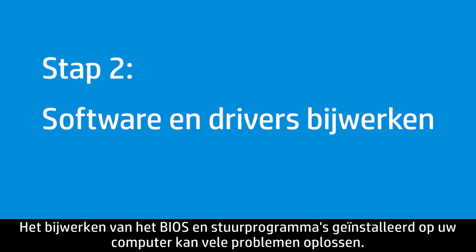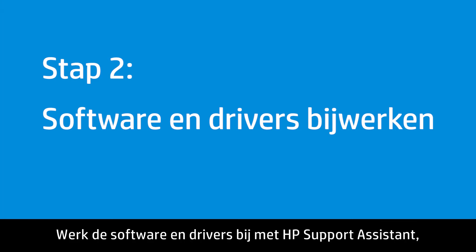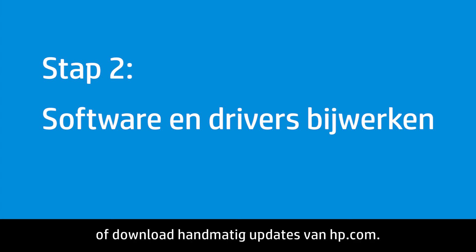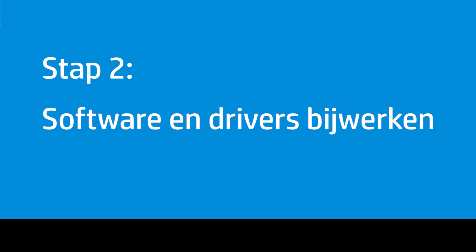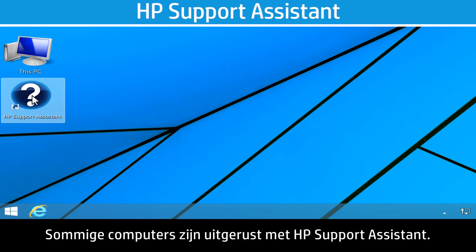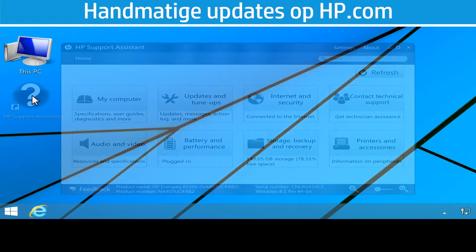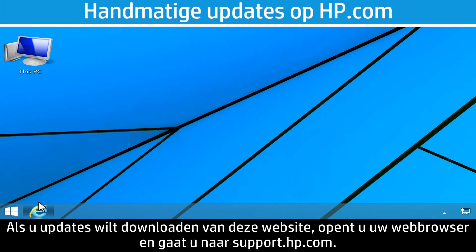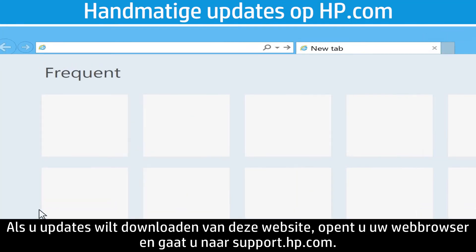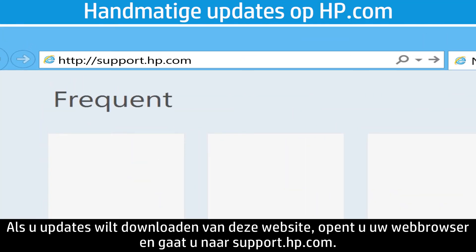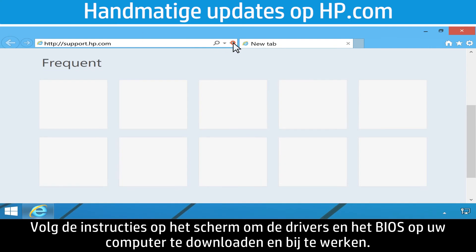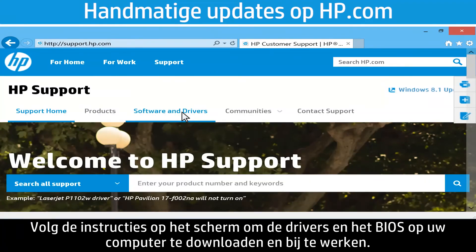Updating the BIOS and drivers installed on your computer can resolve many issues. Update the software and drivers using HP Support Assistant, or manually download updates from hp.com. Some computers come equipped with HP Support Assistant — use this program to easily update the drivers and BIOS. To download updates from HP's website, open your web browser and go to support.hp.com. Follow the on-screen instructions to download and update the drivers and BIOS on your computer.